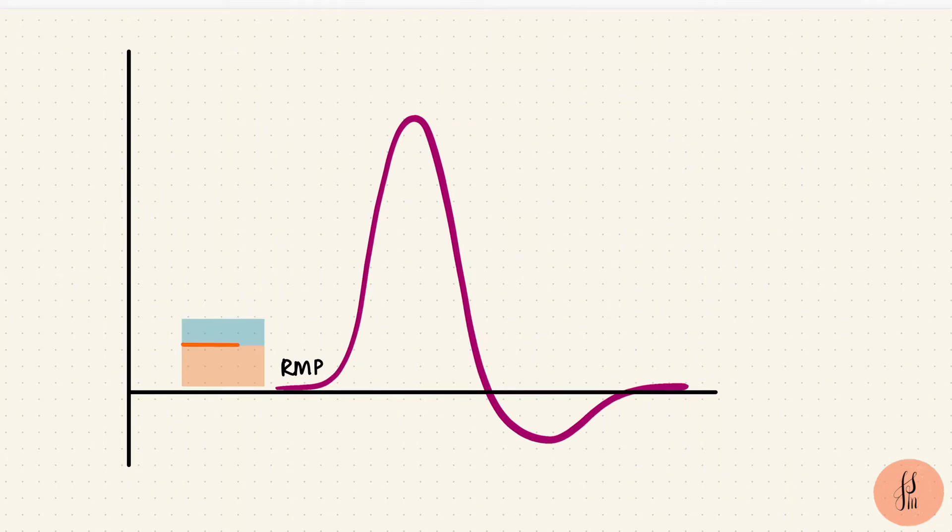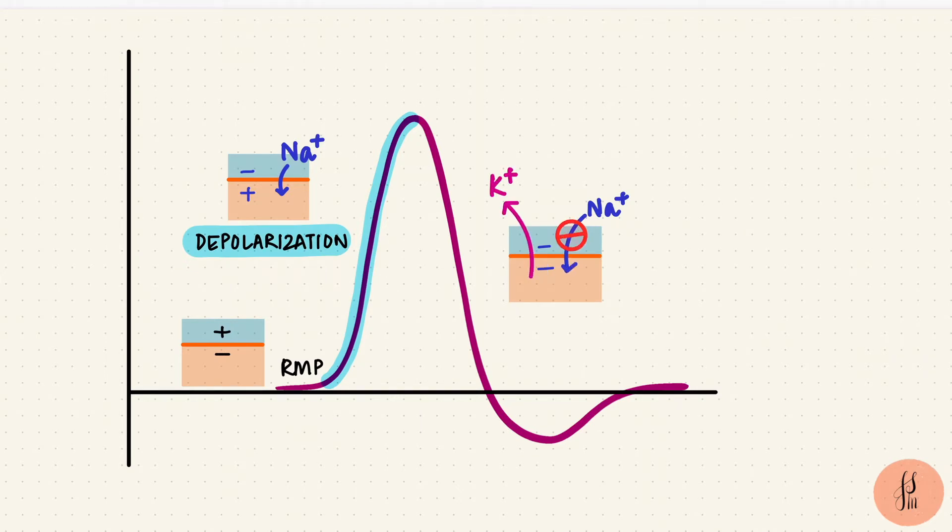At rest, the membrane potential is negative and the membrane is polarized. Sodium entering the cell makes the membrane potential more positive and causes depolarization. When that stops and potassium leaves the cell, the membrane potential starts becoming more negative again. That's repolarization. Continued potassium efflux makes the membrane potential more negative than at rest. That is hyperpolarization.